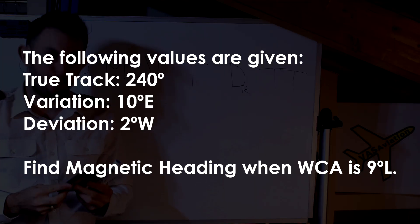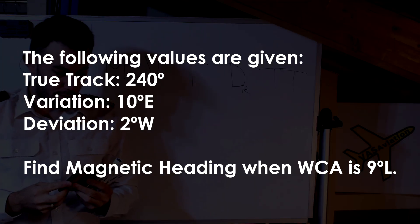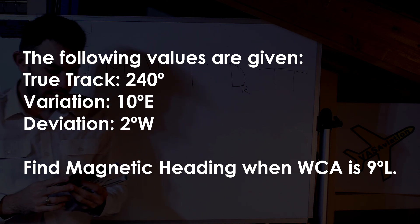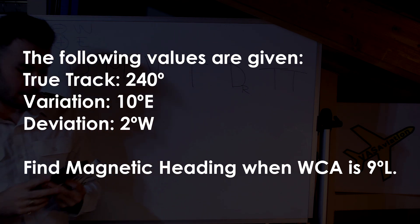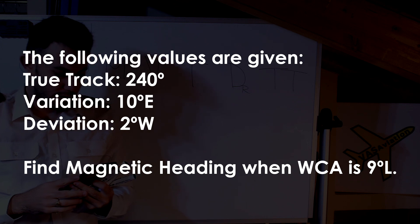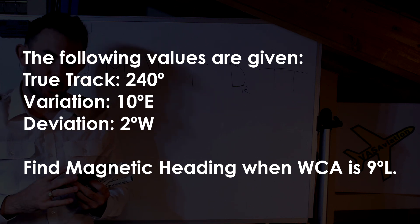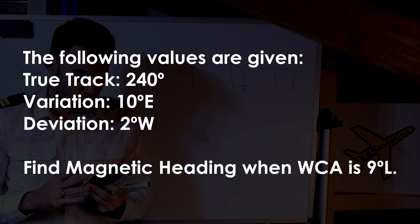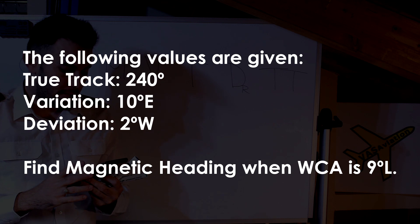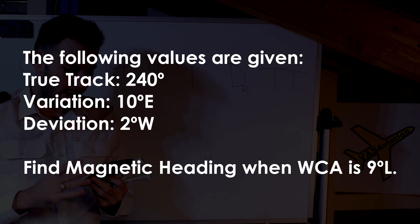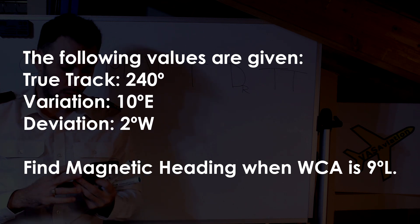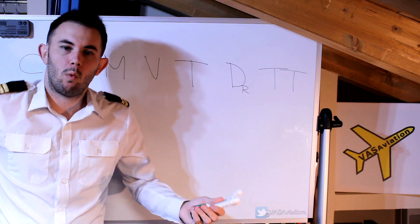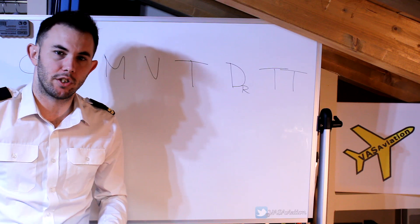Now the second question says: the following values are given — true track 240 degrees, variation 10 degrees east, deviation 2 degrees west. Find the magnetic heading when the wind correction angle is 9 left.